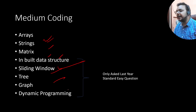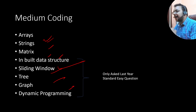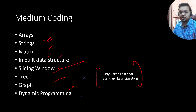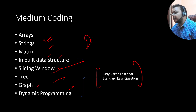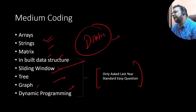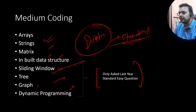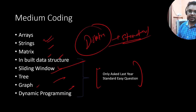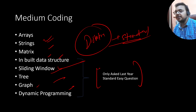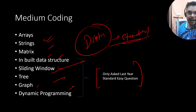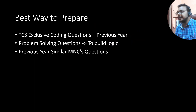For medium coding, topics include arrays, strings, and matrix as before, but last year TCS also asked questions from sliding window, trees, graphs, and dynamic programming in some sets. For example, from graphs they asked Dijkstra's algorithm — a very standard question. Previously we hadn't seen TCS asking graph questions, but they did. Also, normalization will be done in TCS if in any shift the coding question has high difficulty.